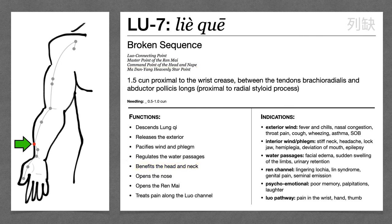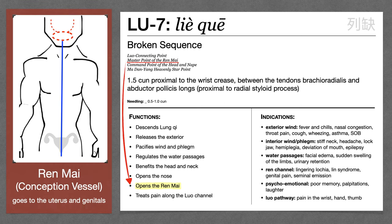Lung 7 is also the opening point for the Ren Mai, or conception vessel. The conception vessel is an extraordinary channel that runs up the anterior midline and connects with the uterus and genitals. So that's why we see Lung 7 treating conditions like uterine problems and genital problems — it's not that these things have anything to do with the lung, it's that this point is connected to the Ren Mai.